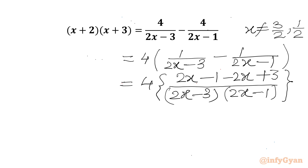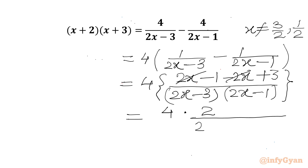Now plus and minus 2x will cancel. We will get 4 times (3-1 = 2) over (2x-3)(2x-1).